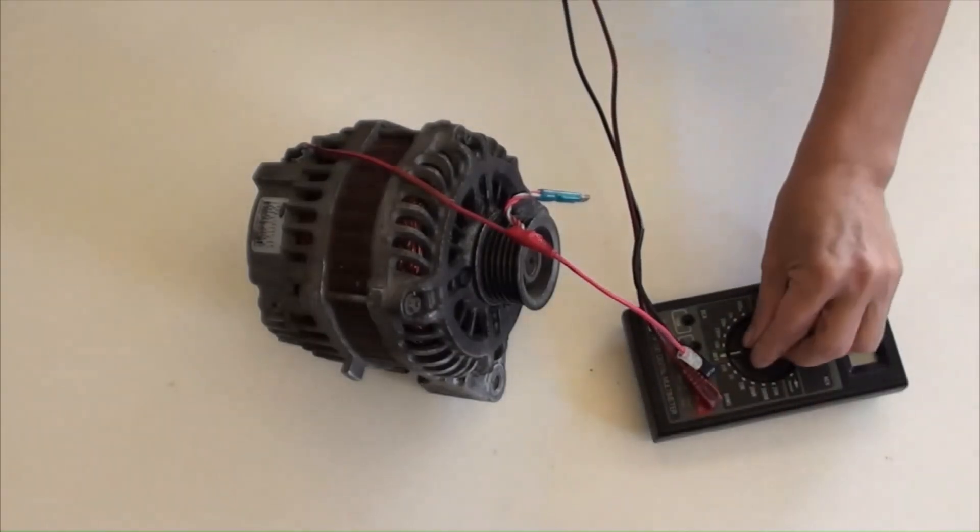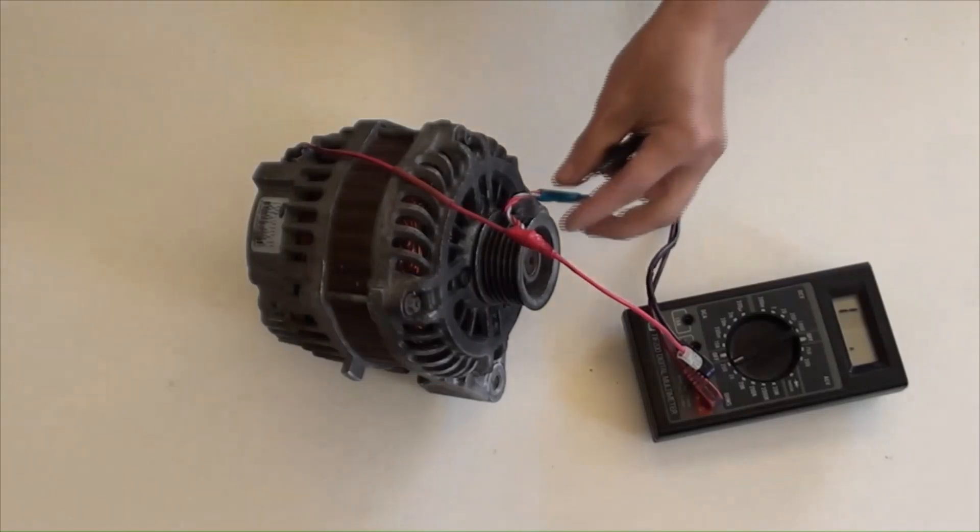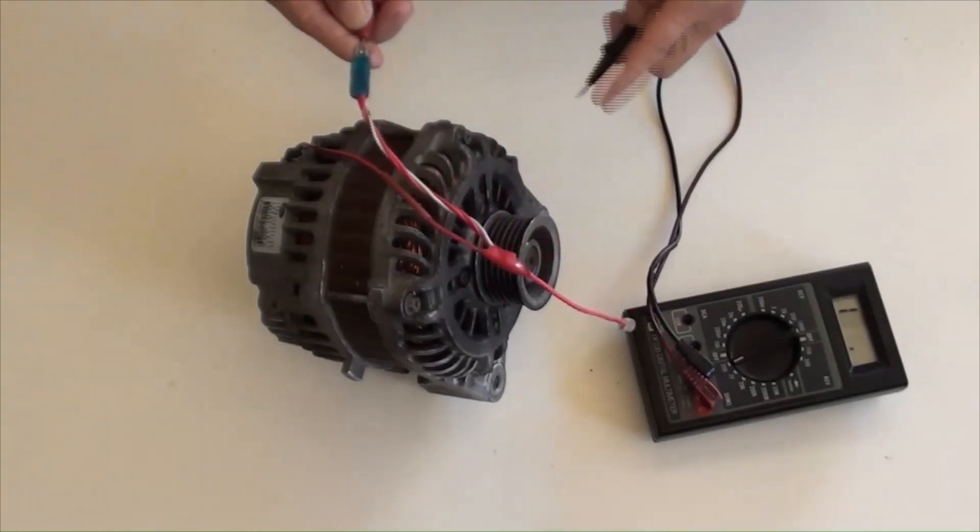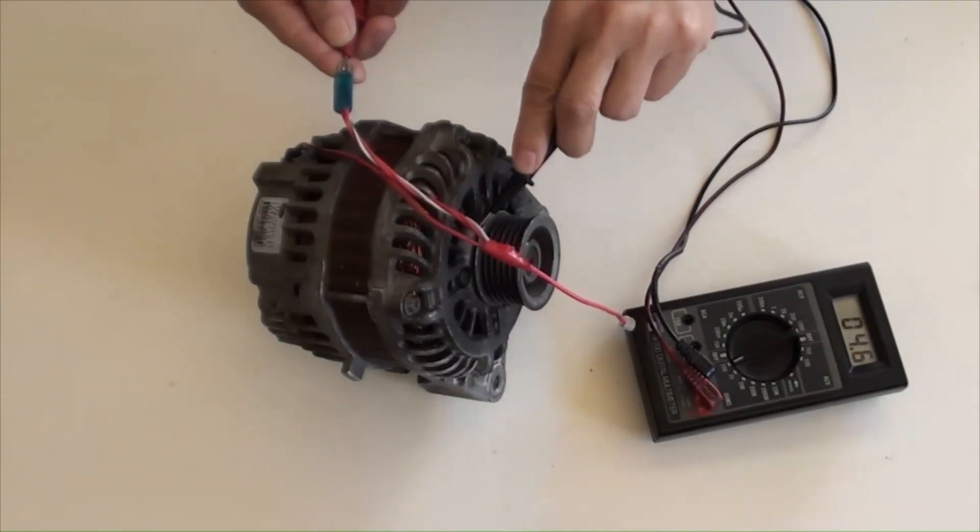Using a multimeter to check resistance between the red wire and body, it should be just a few ohms. Yes, it's okay.